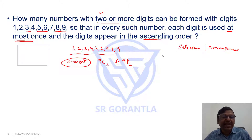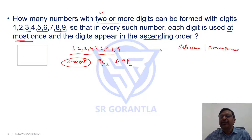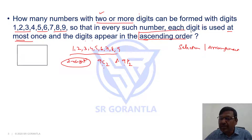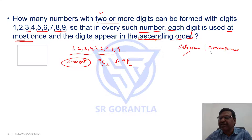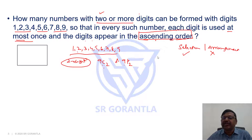If it is only selection, the answer is 9C2; if it also involves arrangement, it is 9P2. But the question puts the condition that digits must appear in ascending order — so it is only a selection, there is no arrangement. Let me explain with an example. Suppose I select two digits, say 1 and 2.